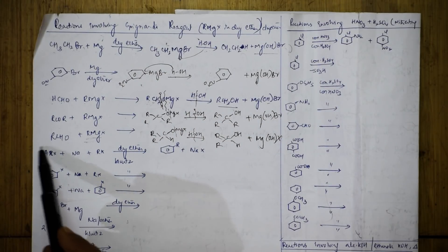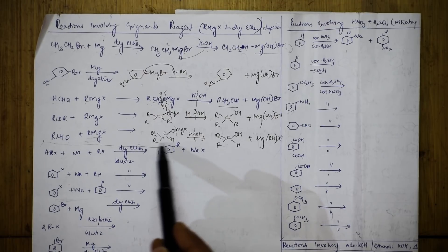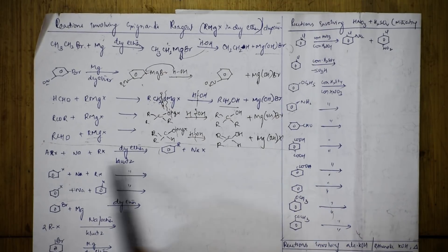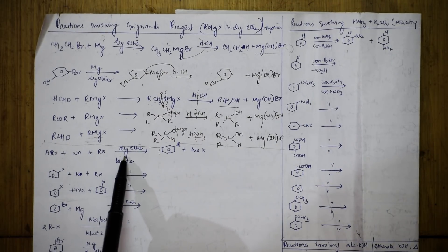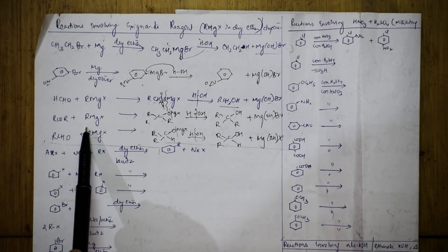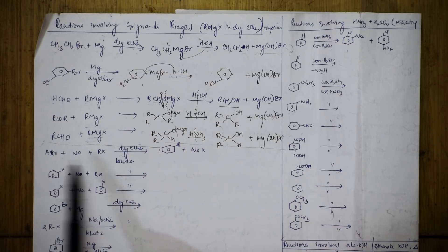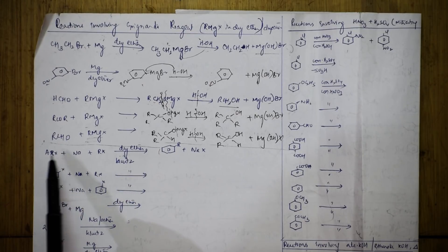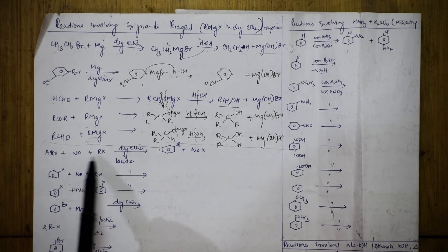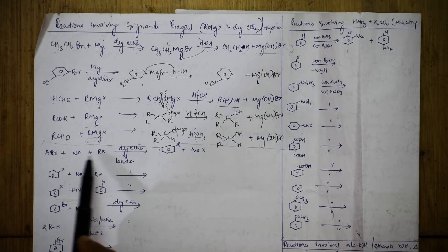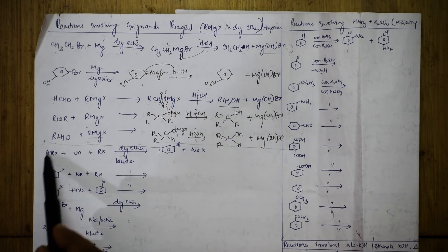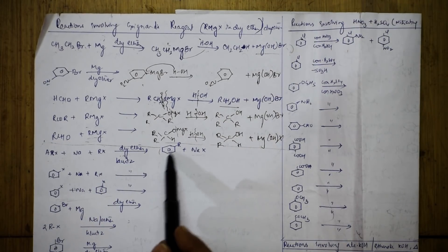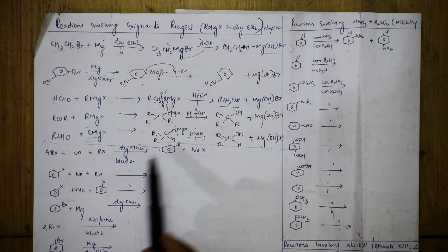Now, suppose there is one more set of reactions where you have sodium metal with dry ether. This is magnesium metal with dry ether - that is Grignard's. This is sodium metal with dry ether - that is Wurtz reaction. Here I have aryl halide and alkyl halide. NaX comes out, and both the alkyl and aryl groups will link.